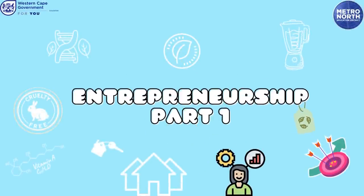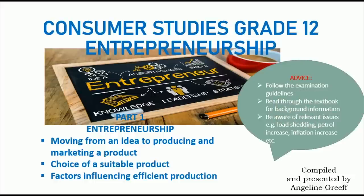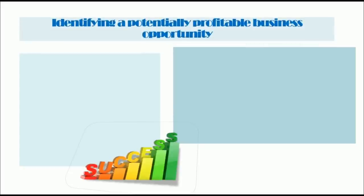In this part, we're going to look at moving from an idea to producing and marketing a product, the choice of a suitable product, and factors influencing efficient production. Use your examination guidelines to follow and guide you. Use your textbook for background information and facts — either the Oxford or the Focus. Be aware of relevant issues happening around you in South Africa, such as load shedding, petrol price increases and inflation, as these are the types of case studies used.